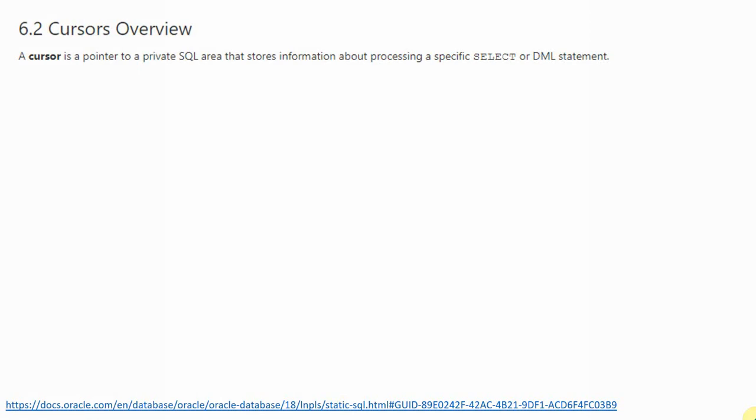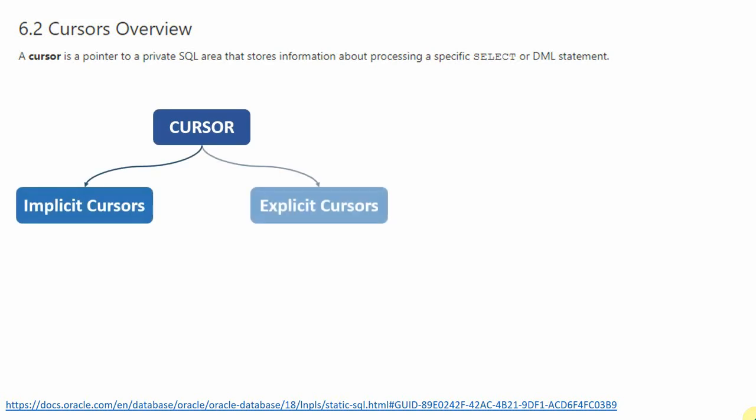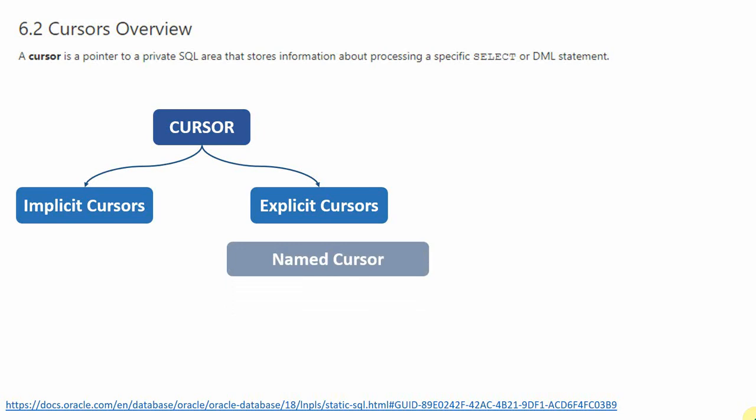Just to quickly give you a summary of what you have learned in the previous videos: a cursor is nothing but a pointer to a memory location which holds the information about the SQL statement and its result set. Broadly we can categorize cursors into two types — one is called implicit cursor and another is called explicit cursor.